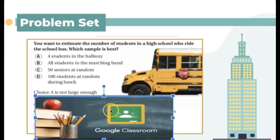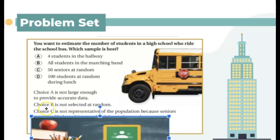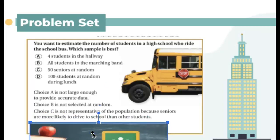A is not large enough. All right, so you just, A shouldn't be a very good sample to provide accurate data. So B, B is not selected at random. So it's not a good data again because it's only on the marching band. How about the others? So C is not representative of a particular population because seniors are more likely to drive to school than other students, right? So that's not a good sample either.